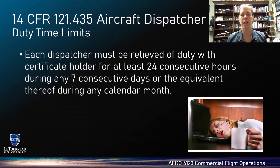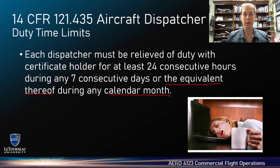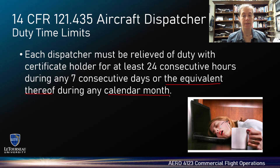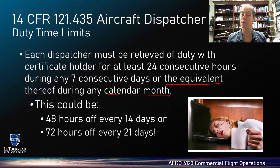The rest of the limitation says you have to relieve each dispatcher of duty with that certificate holder for at least 24 hours during any seven consecutive days, or the equivalent thereof during any calendar month — meaning from the beginning to end of a month like September. The FAA's phrase 'the equivalent thereof' means you could be given 48 hours off every 14 consecutive days, or even 72 hours off every 21 consecutive days. So it might seem great, but it's really not so great.